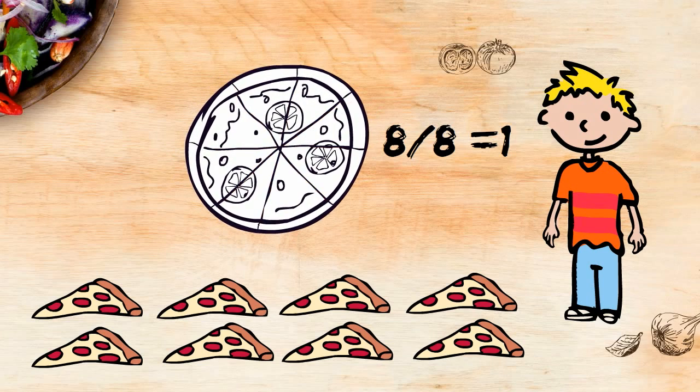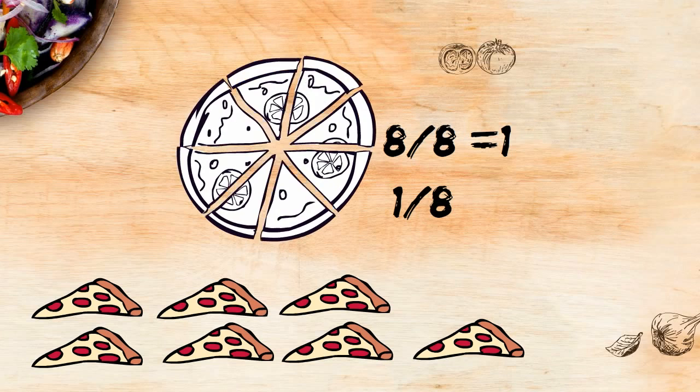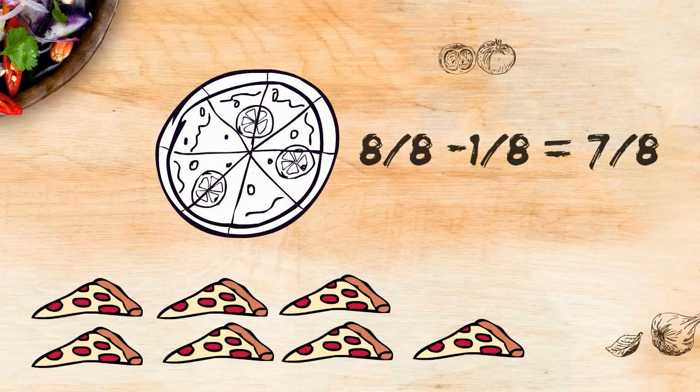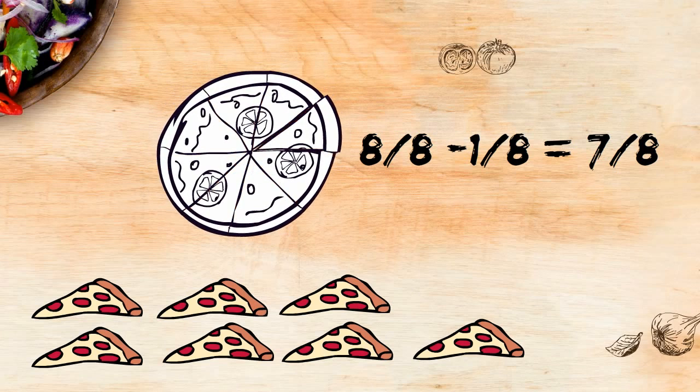Your brother ate one slice, so I can write this as 1 over 8. Therefore, I can subtract 8 over 8 minus 1 over 8 equals 7/8, because you only have 7 slices remaining of the original 8.